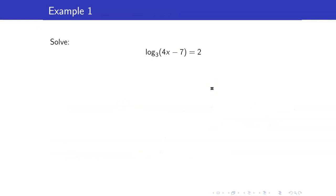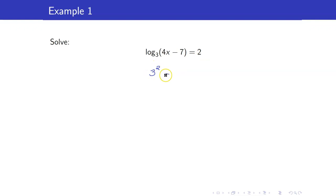Let us consider our first example. Let us solve log of 4x minus 7 to the base 3 equals 2. Note that you only have a single logarithm here, so we are already done with steps 1 and 2. Now we can transform this to exponential form. The base here is 3, the exponent is 2, and our power is 4x minus 7. So we have 9 equals 4x minus 7.